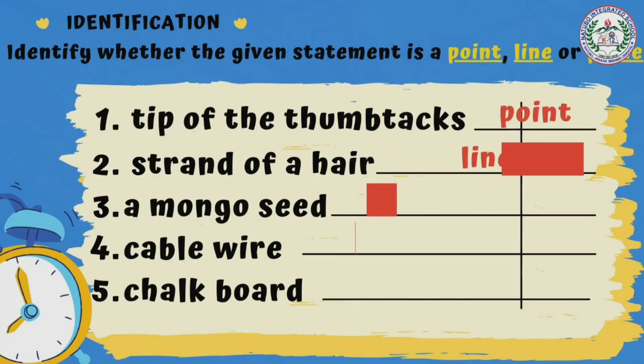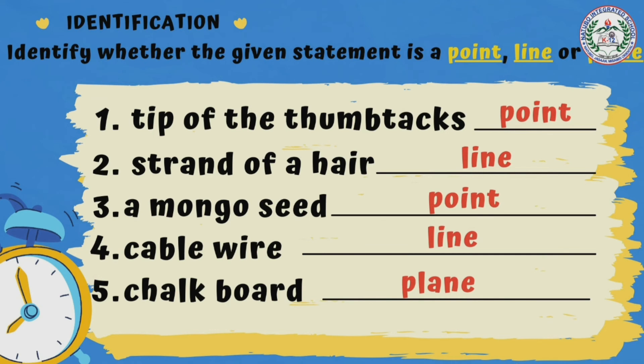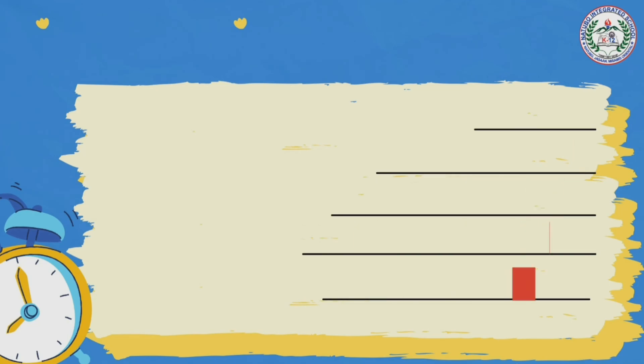Let's check your answer. For number 1, tip of the thumbtacks, it is a point. Number 2, strand of a hair, it is a line. Number 3, a mungo seed, it is a point. Number 4, cable wire, it is a line. And number 5, chalkboard, it is a plane. I hope you got it right, and good job for that.